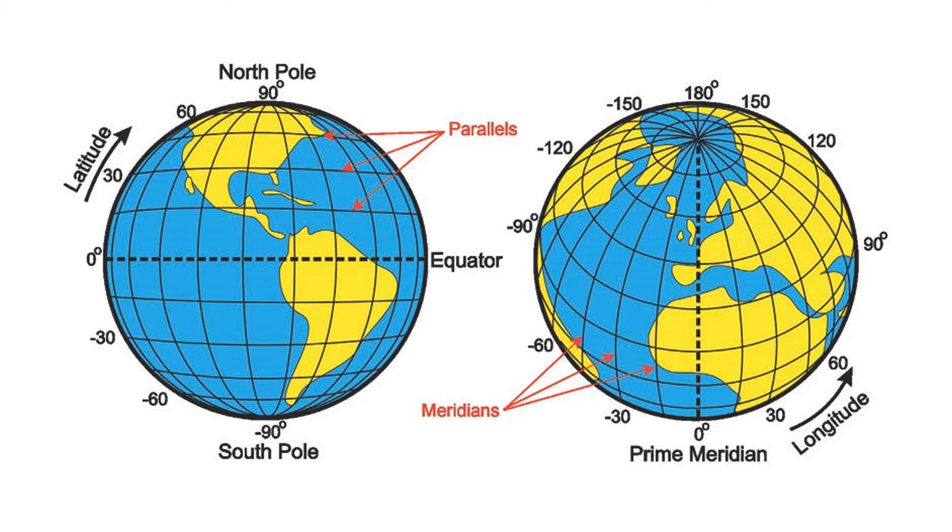In summary, together longitude and latitude provide a global grid system for locating points on the Earth's surface. A standard globe would have 360 lines of longitude and 181 lines of latitude.